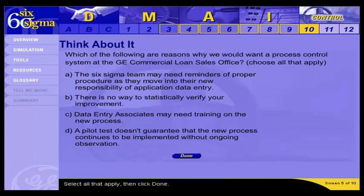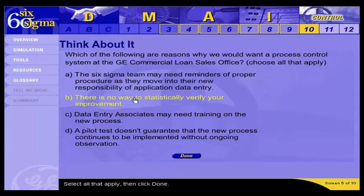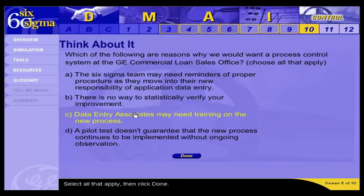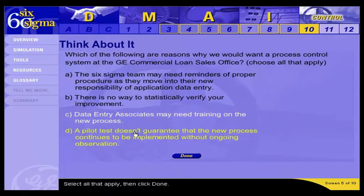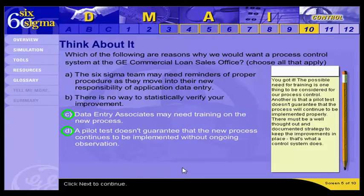Which of the following describes specific reasons we would want a process control system for the commercial loan sales case improvements? The possible need for training is one thing to be considered for our process control. Another is that a pilot test doesn't guarantee that the process will continue to be implemented properly. There must be a well thought out and documented strategy to keep the improvements in place. That's what a control system does.